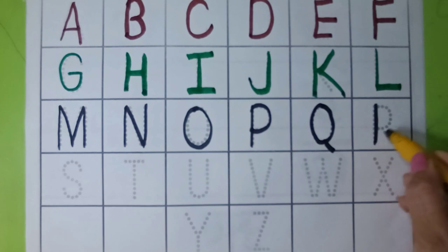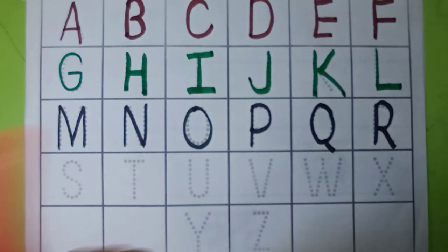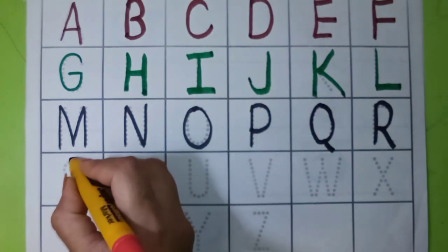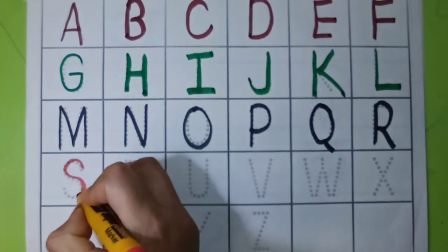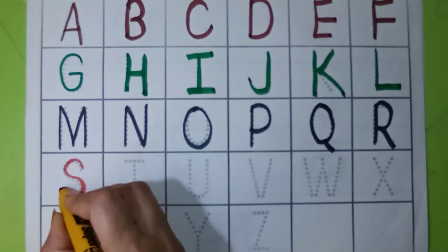Q for queen. R, R for red, R for red. Red color. S, S for sun, S for sun.